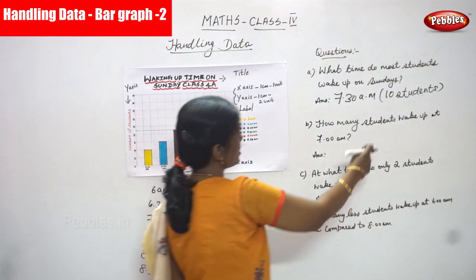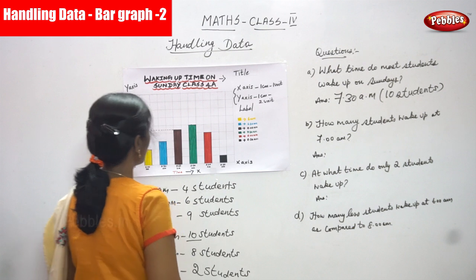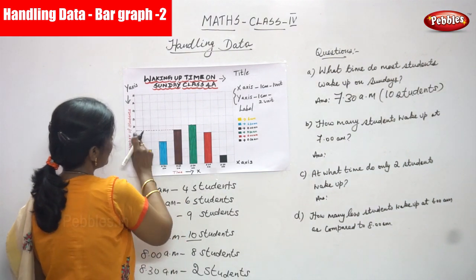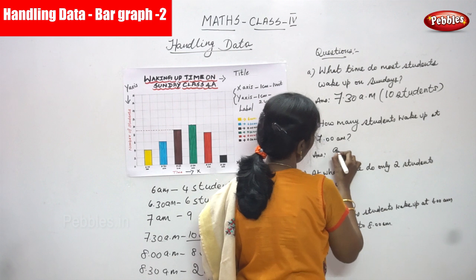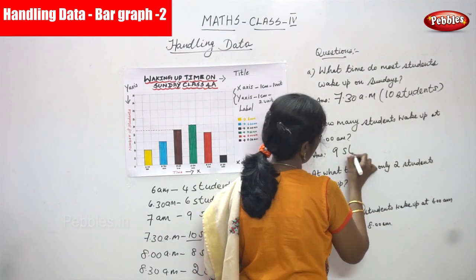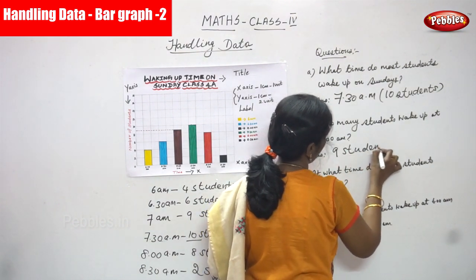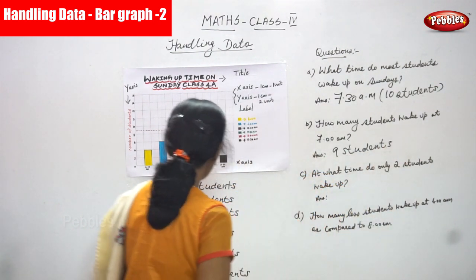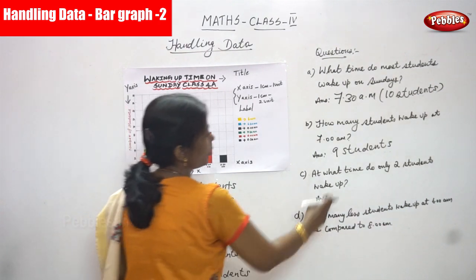How many students wake up at 7 a.m.? It is 7 a.m. — that is 9 students. How many students wake up at 7 a.m.? 9 students. I clearly mention 9 students.